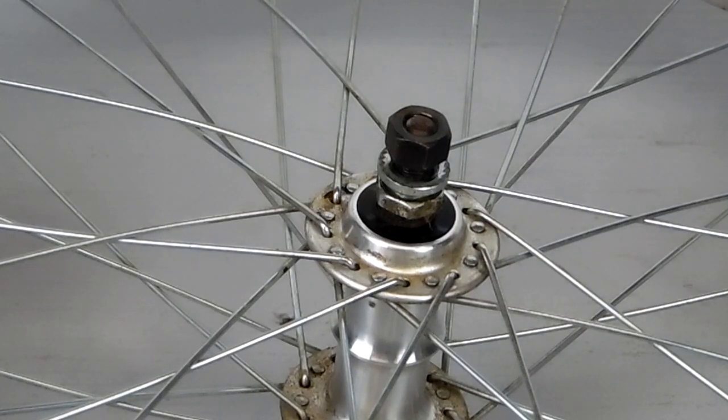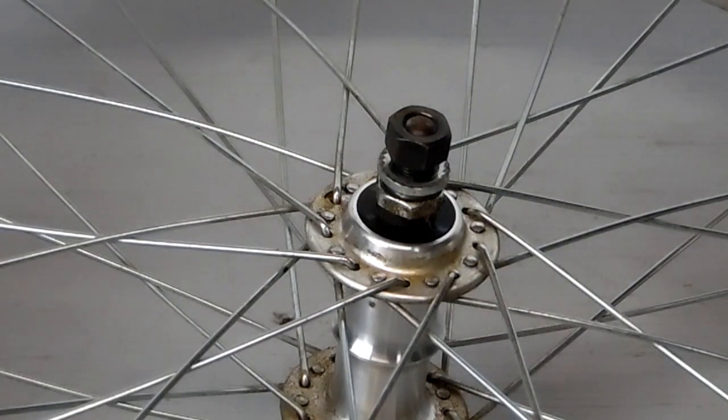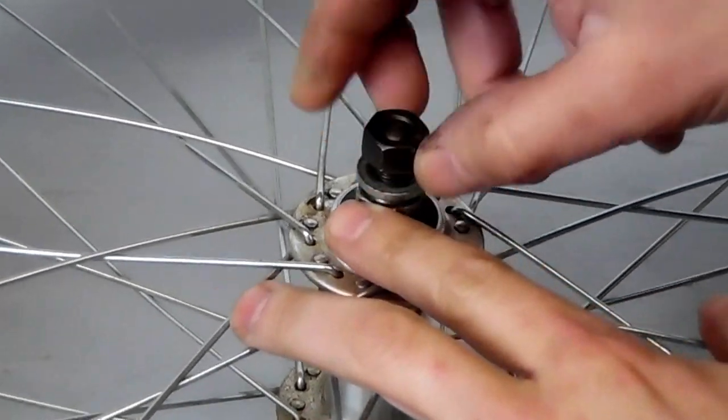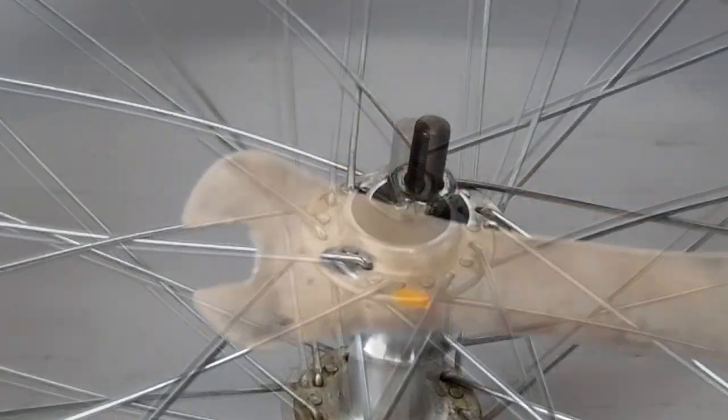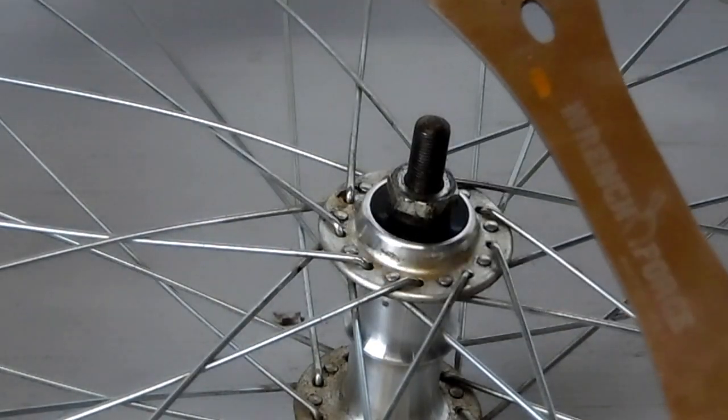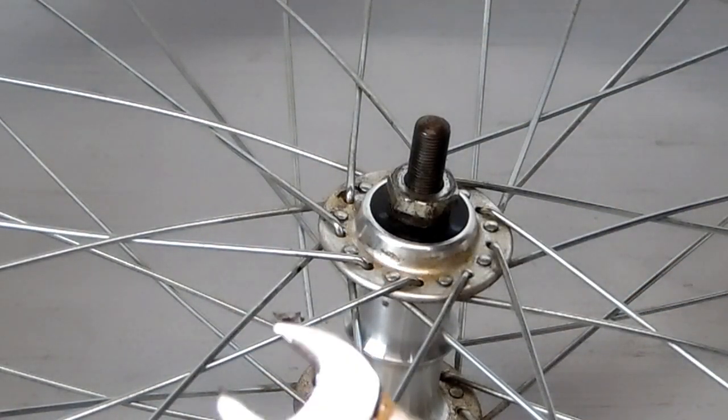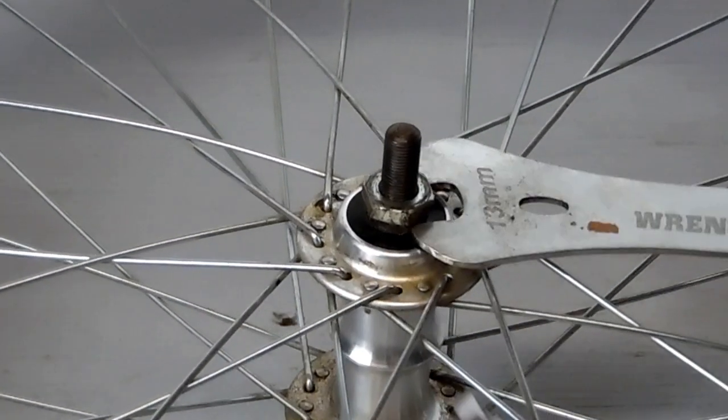We're going to remove the hardware: axle nut and washer, anything like that. And then all we'll have is our jam nut and our cone nut.